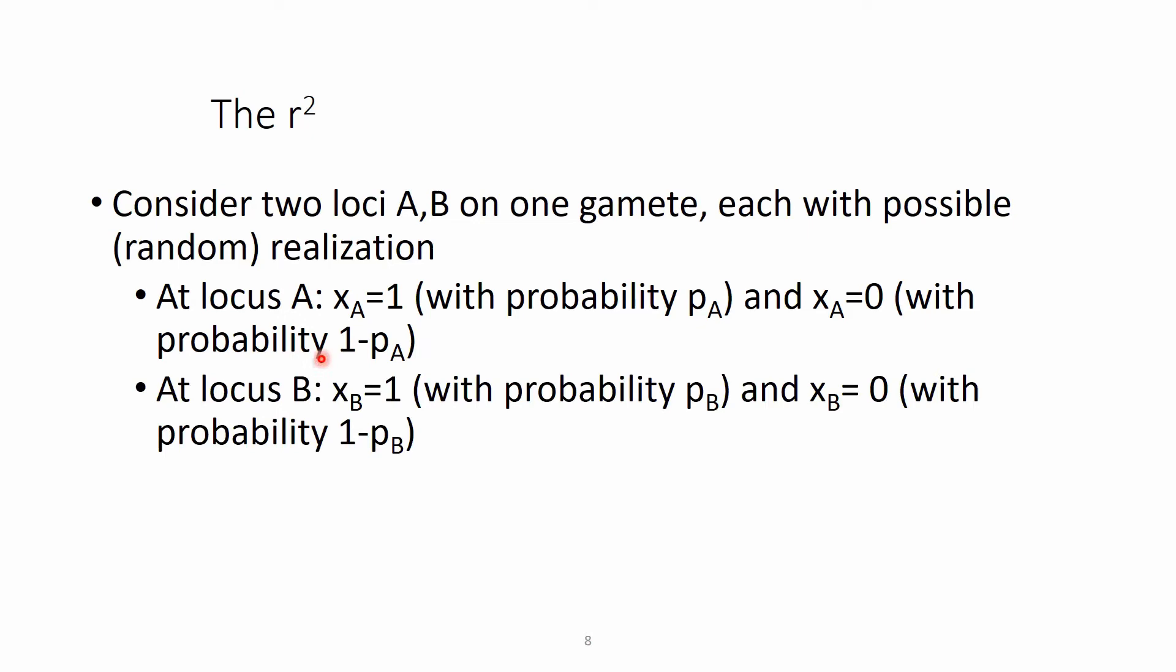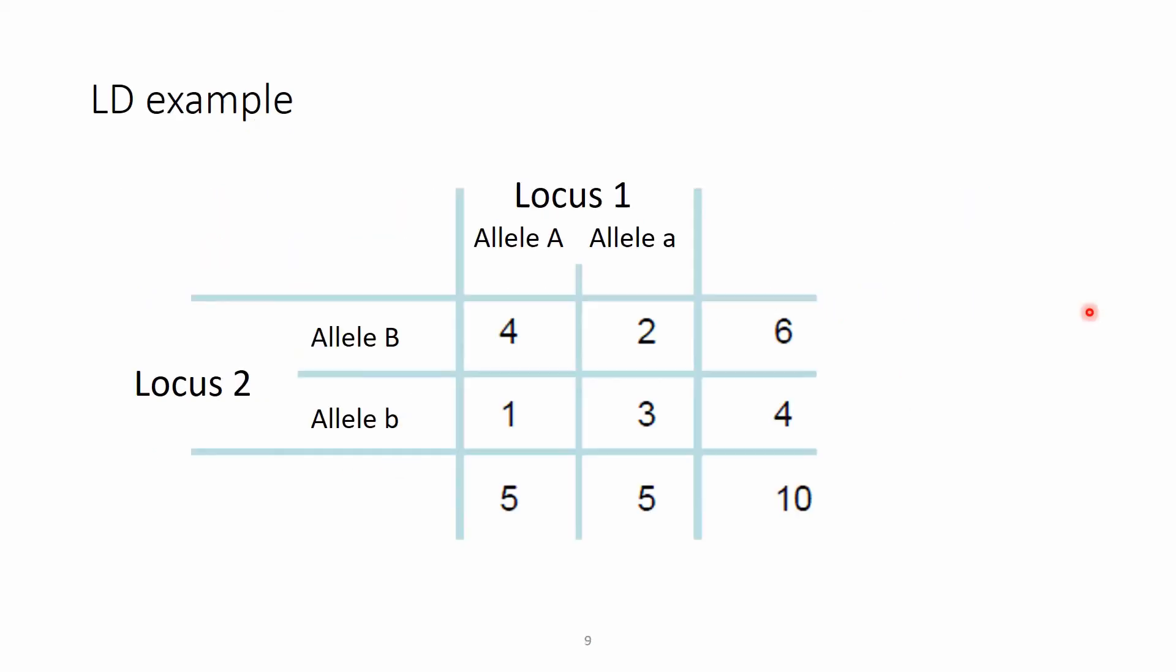The very same thing happens with the locus B. We assign a value of one with the probability of P capital B and the value of zero with the probability of one minus P capital B. This is a very particular example that we will follow up on in detail in the next video, but still I thought it's useful to show it here, so perhaps it eases some understanding. Basically what we have are two loci here, locus one and locus two. We have allele capital A and lowercase a, and for locus two, allele capital B and lowercase b.